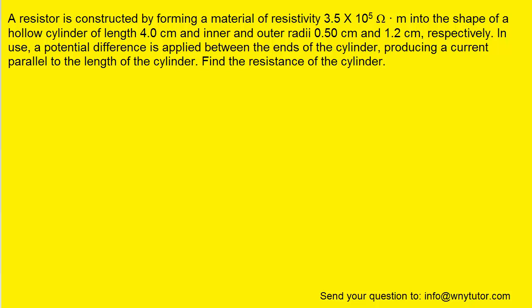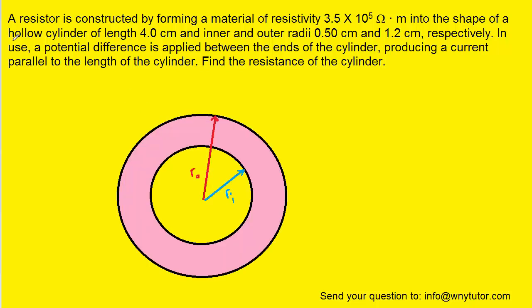In order to calculate the resistance of the cylinder, it might be helpful to draw the cross-sectional view of the cylinder. Now the question notes that the cylinder is hollow, and so we've left an empty region in the middle, and then it has an outer radius that we've marked in red.